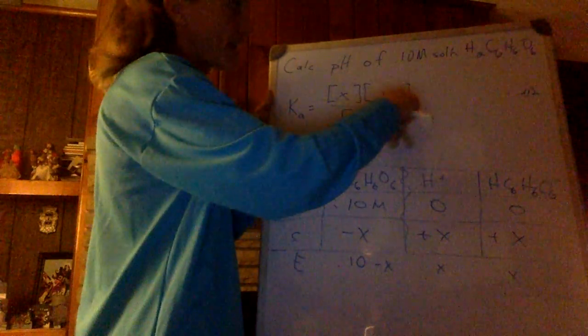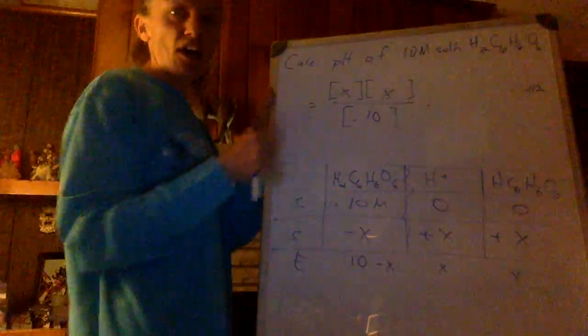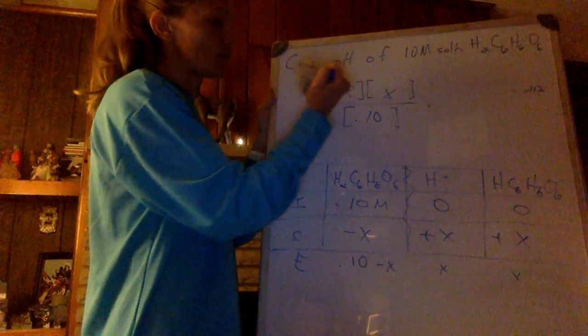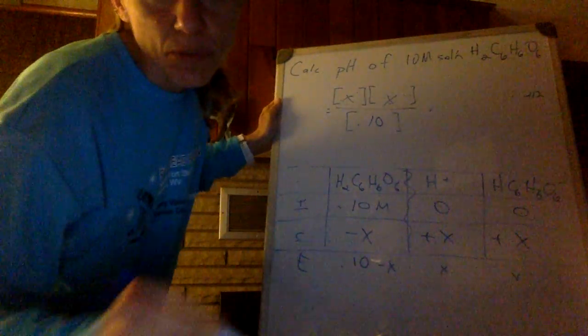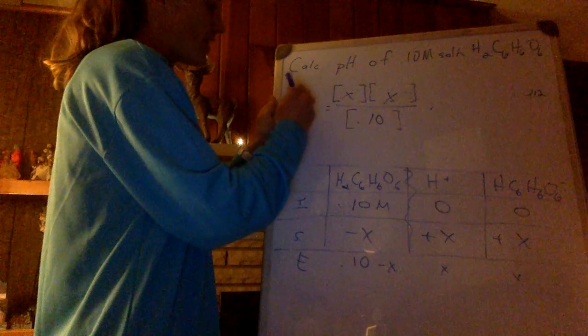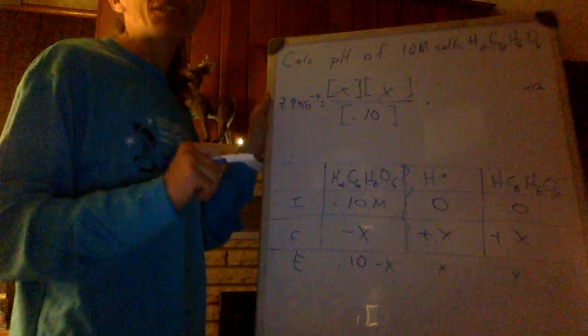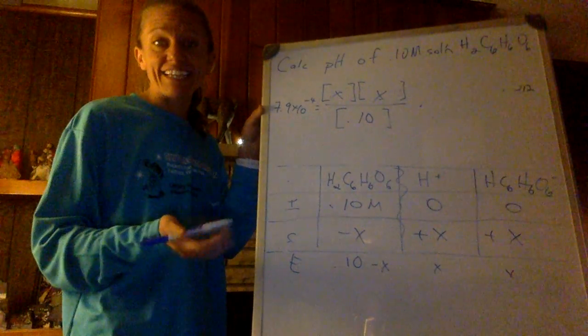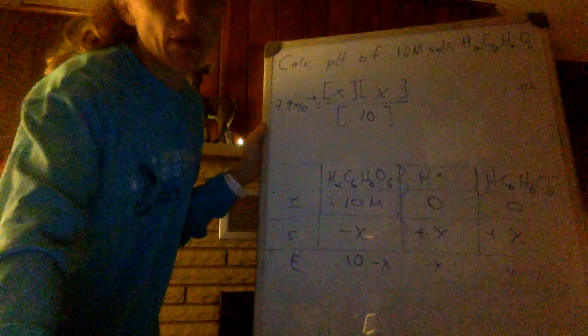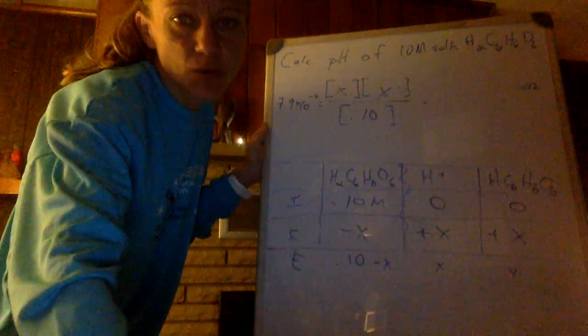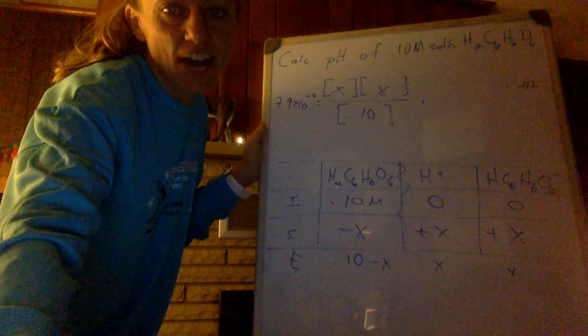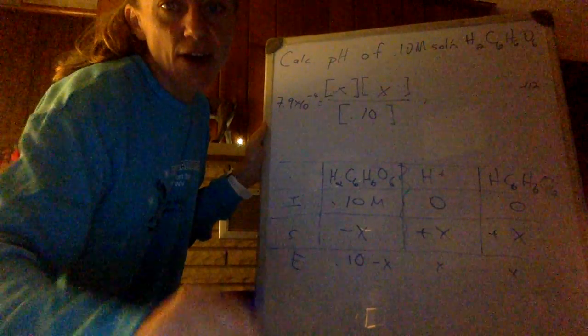I just threw them in my Ka equation up here. So, my Ka value is going to be 7.9 times 10 to the negative fourth. Remember, that's a measure of how strong an acid is. Once I've got my ICE chart set up, as well as that, I calculate my value for x.